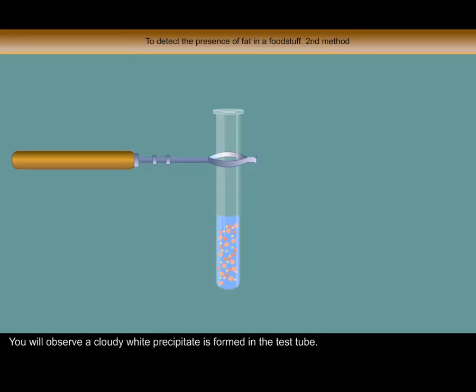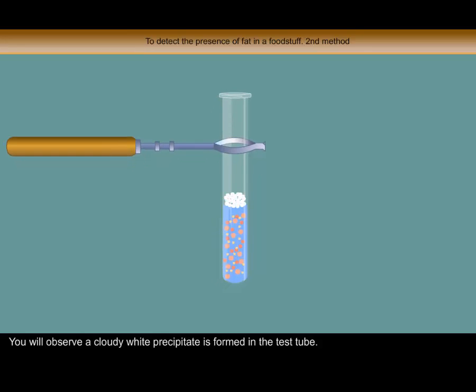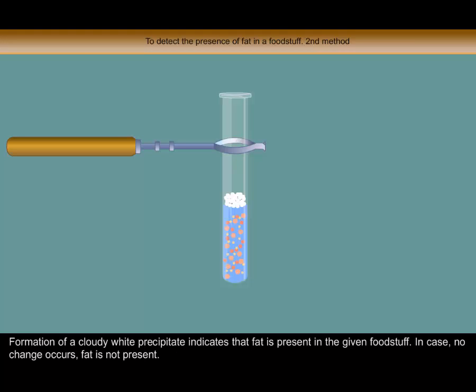You will observe a cloudy white precipitate is formed in the test tube. Formation of a cloudy white precipitate indicates that fat is present in the given foodstuff.